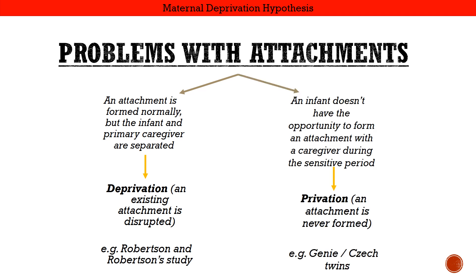There is another form of problem with attachment known as privation. This is when an infant doesn't have the opportunity to form any attachment with a caregiver during the sensitive period, and this is very rare. More often than not, even if the infant doesn't form an attachment with their caregiver, they will form an attachment with someone else — a teacher, grandparent, auntie, or guardian. We will look at the case of Genie and another case of the Czech twins.